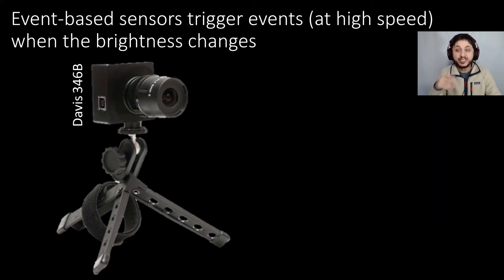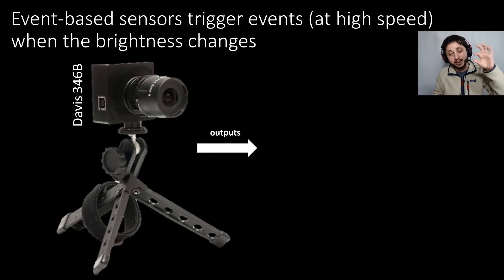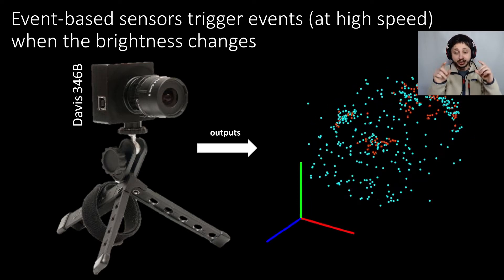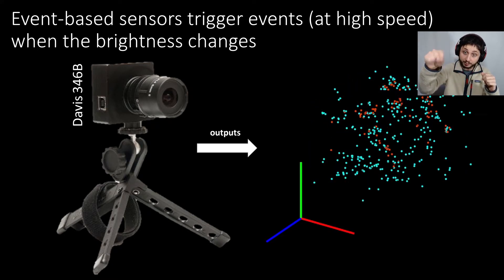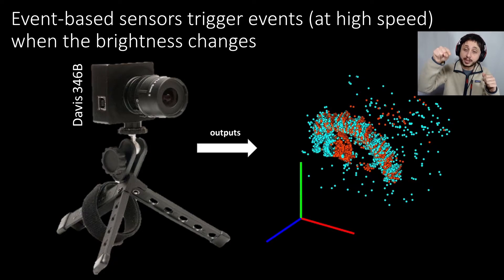Event-based sensors are basically tailor-made for applications like these. Because in event-based cameras, the sampling is tied to the dynamics of the scene itself. So basically each pixel in an event-based camera triggers when the local contrast at that pixel changes. So what I've plotted here is red events are places where the local contrast has decreased, and blue events are places where the local contrast has increased. So those are like minus one and plus one.